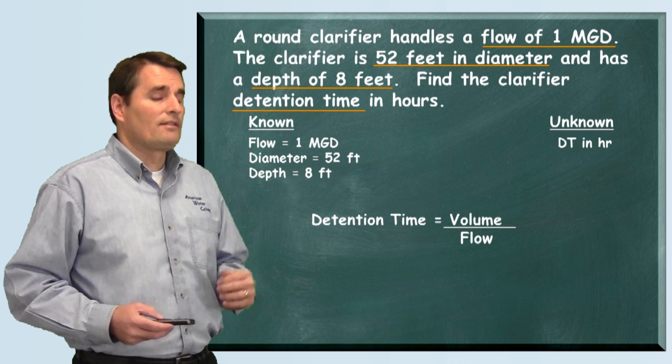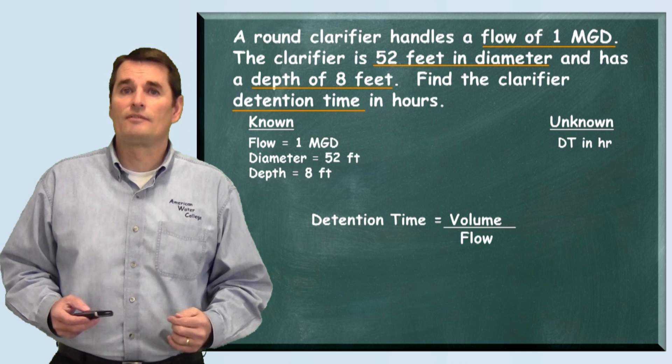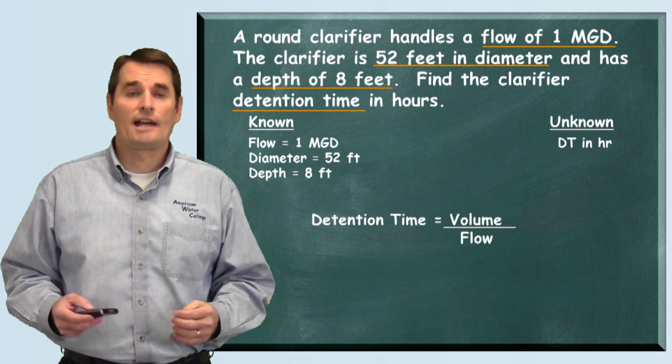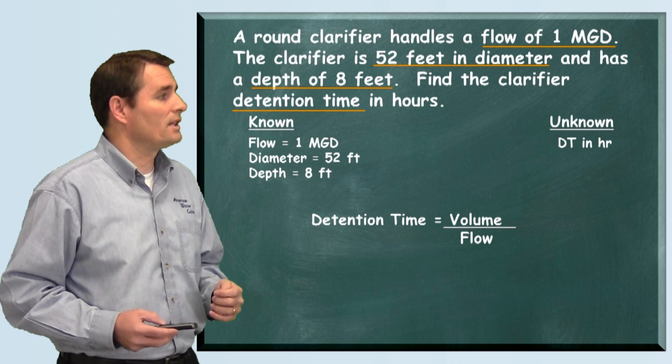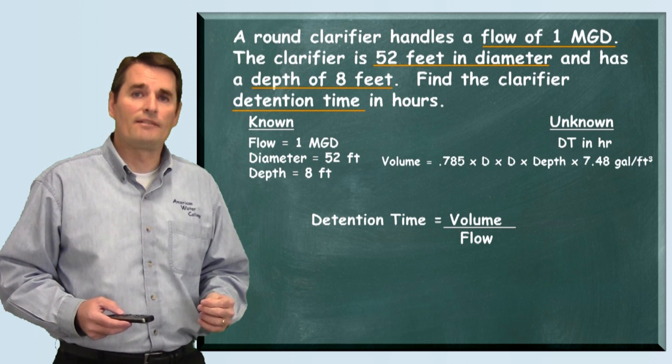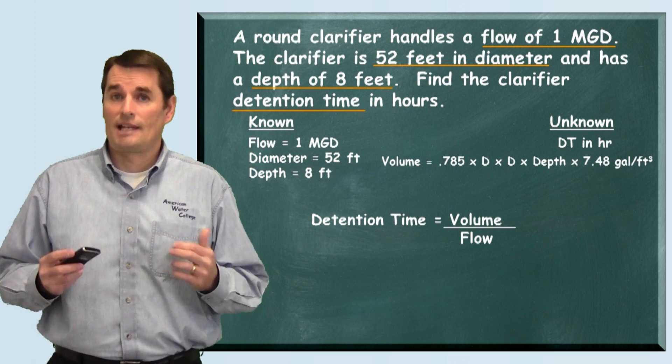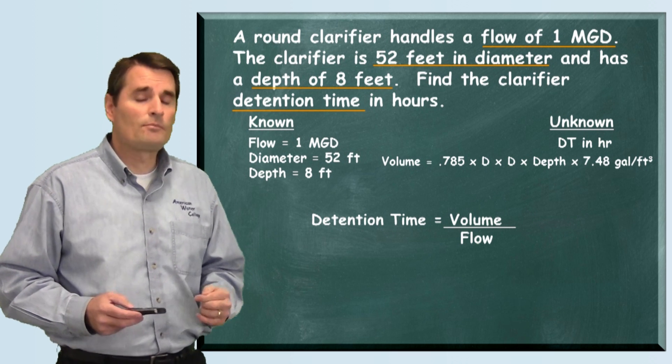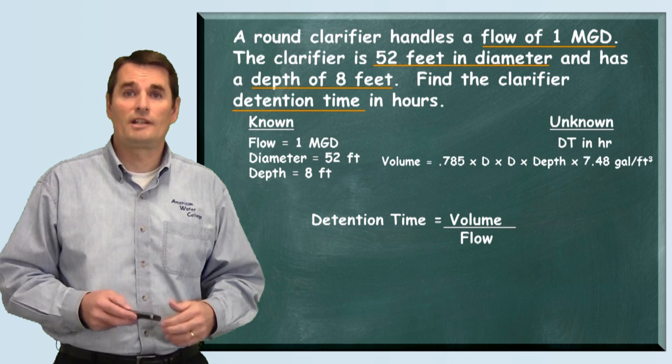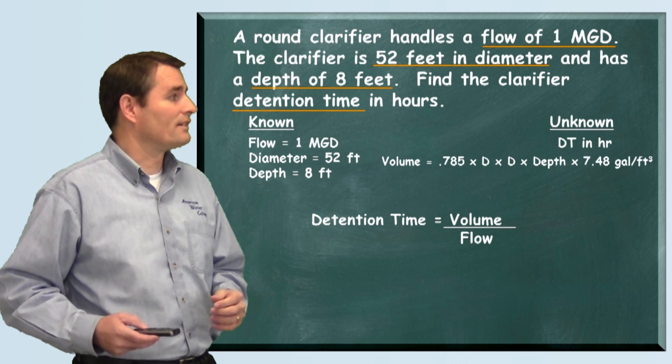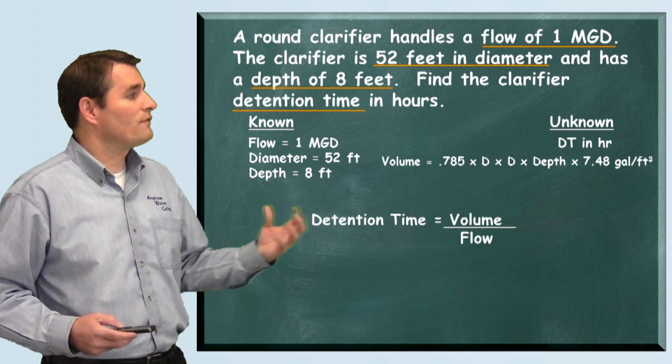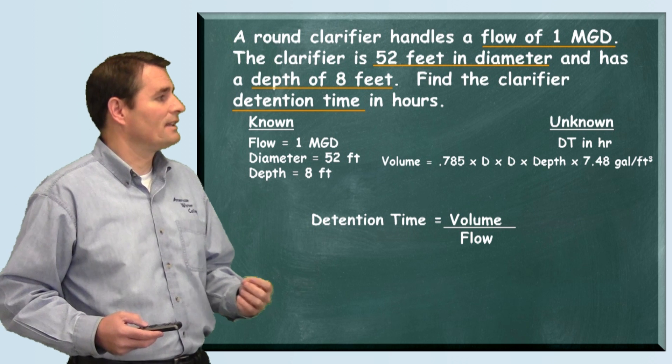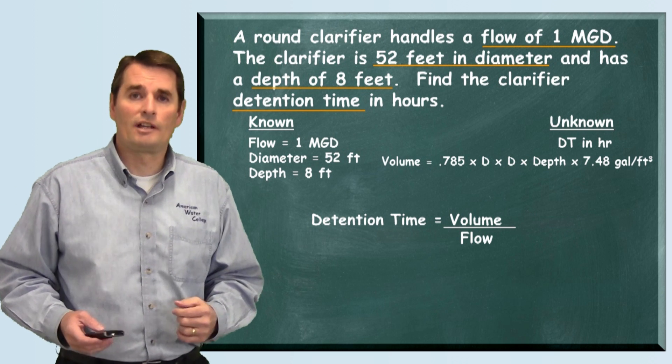We're going to have to calculate the volume of this tank. They didn't give us the volume, so we're going to calculate it. We use the formula that says 0.785 times the diameter times the diameter times the depth times 7.48 gallons per cubic foot is how many gallons are in this tank. So we're going to use the information they gave us, the diameter and the depth, and solve for the volume.